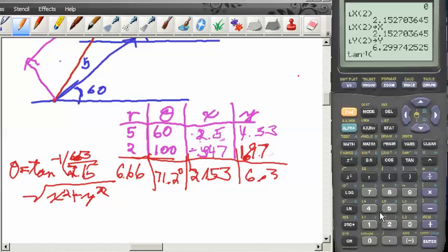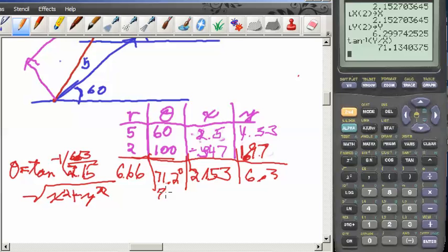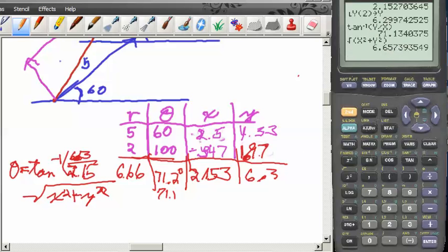All right now I'm going to find out the angle. I'm going to do inverse tangent of y over x, alpha y divided by alpha x. Seventy one point one degrees, so it came out just a little bit different, seventy one point one because I didn't do any rounding. And then square root of x squared plus y squared comes out to be six point six, still six point six six.